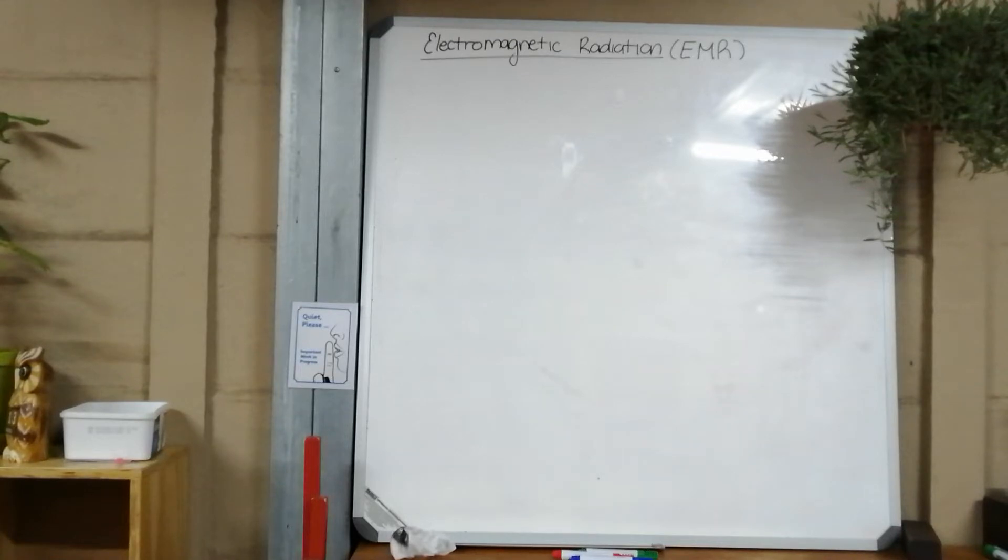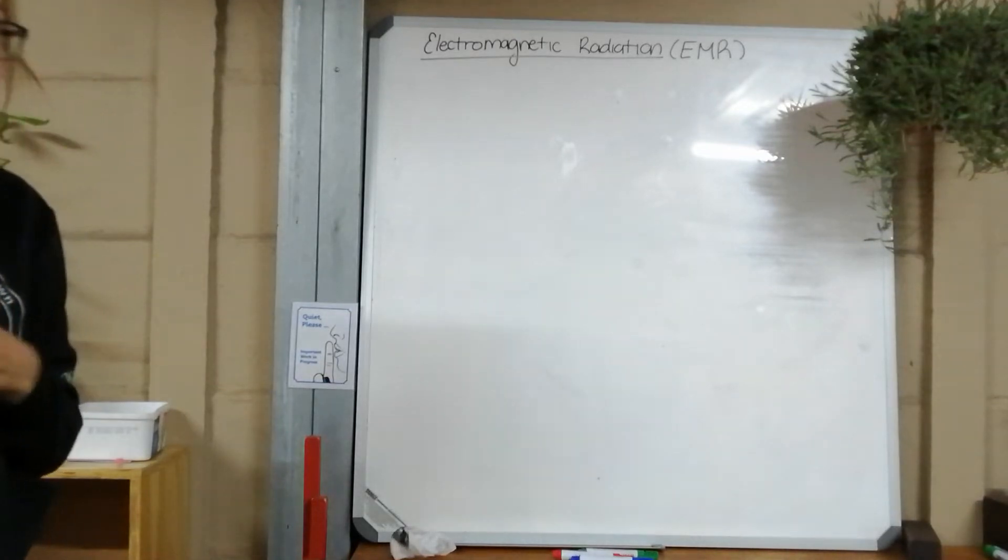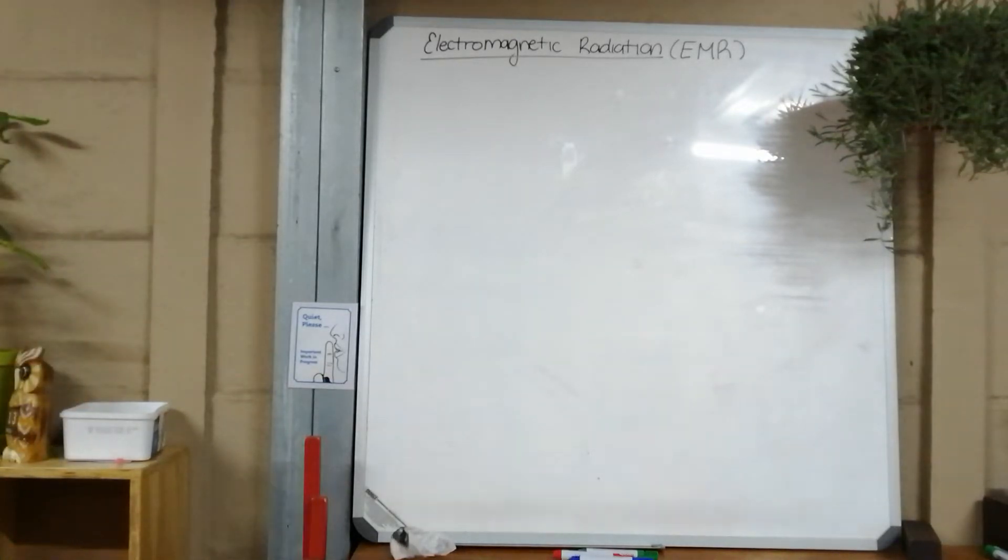That was the last thing that we left off with. We also looked at calculations with waves. So now we're going to start looking at electromagnetic radiation, which you will see abbreviated as EMR throughout the section. The first one is that visible light is part of the electromagnetic spectrum.